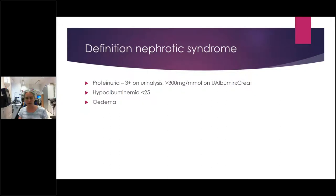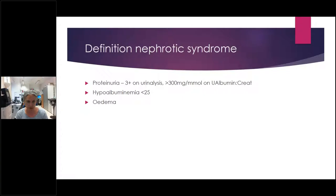Proteinuria — we talk about 3+ or 4+ on urinalysis. By definition, it's more than 300 milligrams per millimole on an albumin-to-creatinine ratio; some do protein-creatinine ratios, which is similar. Then hypoalbuminaemia — albumin of less than 25 — and oedema. You have to have all three of them.